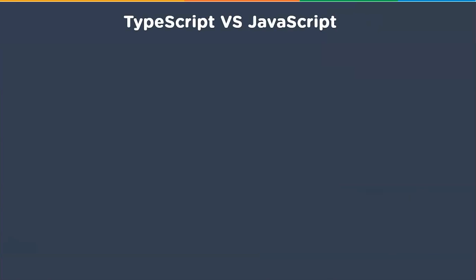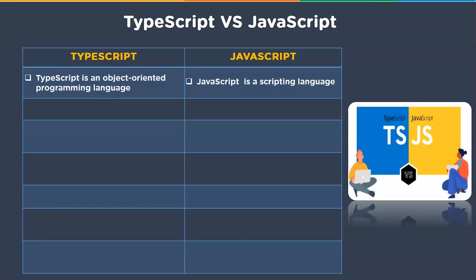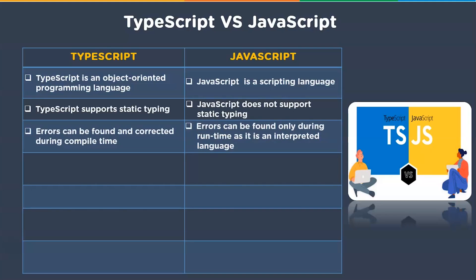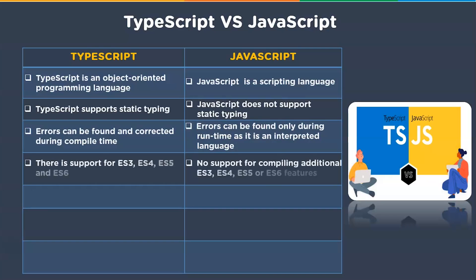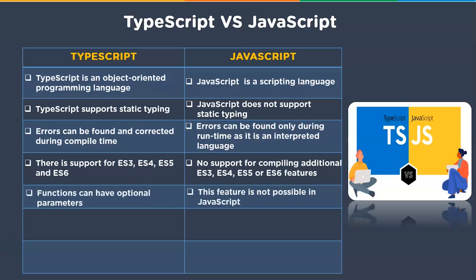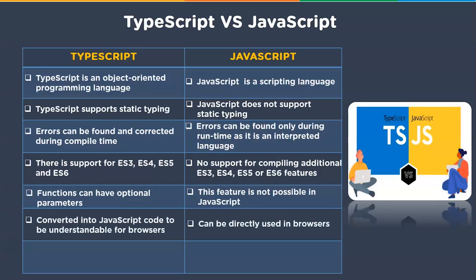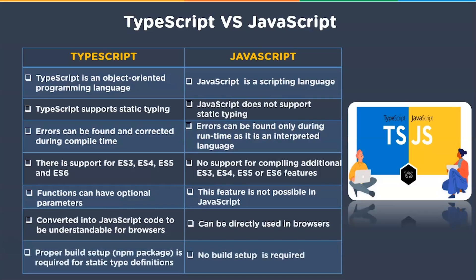Now let us look at the difference between TypeScript versus JavaScript. TypeScript is an object-oriented programming language, whereas JavaScript is a scripting language. TypeScript supports static typing, whereas JavaScript does not. Errors can be found and corrected during compile time; in JavaScript, errors can only be found during runtime as it is an interpreted language. TypeScript supports ES3, ES4, ES5, and ES6, whereas JavaScript has no support for compiling those additional features. Functions can have optional parameters in TypeScript, whereas this feature is not possible in JavaScript. TypeScript is converted into JavaScript for browsers, while JavaScript can be directly used in browsers. TypeScript requires a proper build setup for static type definitions, whereas no build setup is required in JavaScript.